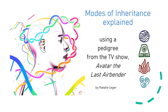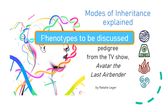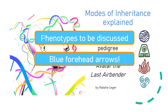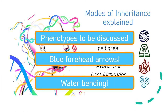Hi, my name is Natalie Leger and I'm going to be explaining modes of inheritance using a pedigree from the TV show known as Avatar: The Last Airbender. The phenotypes that we're going to be discussing in this video are blue forehead arrows and waterbending.